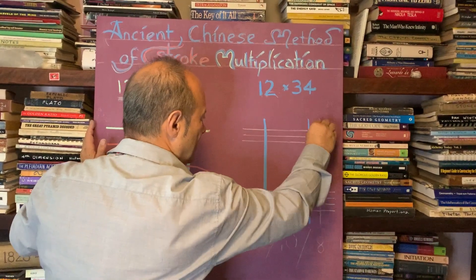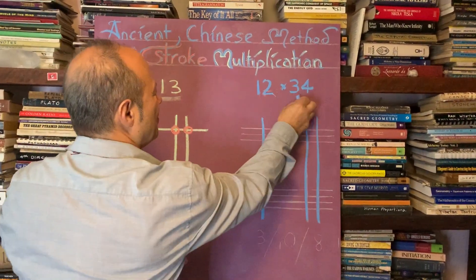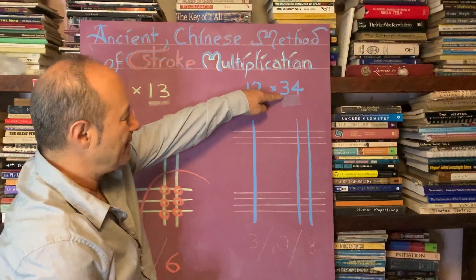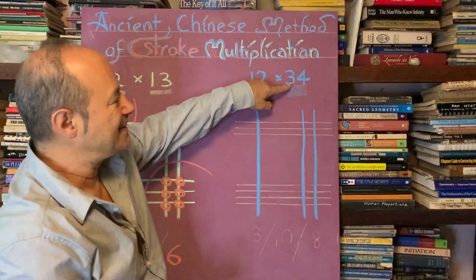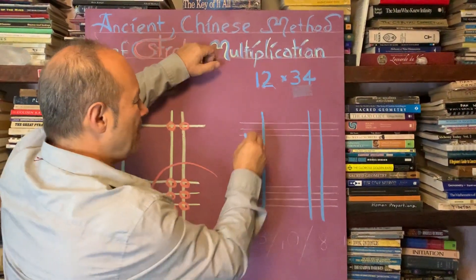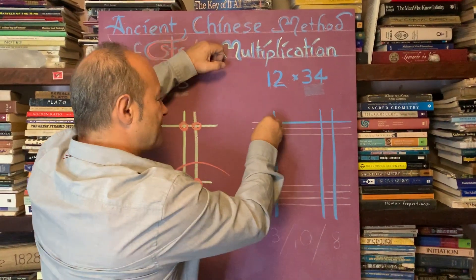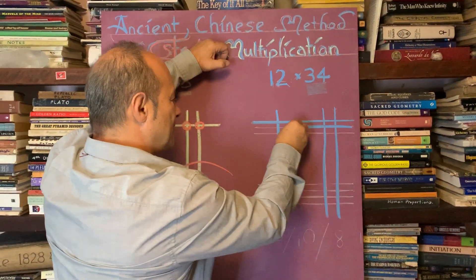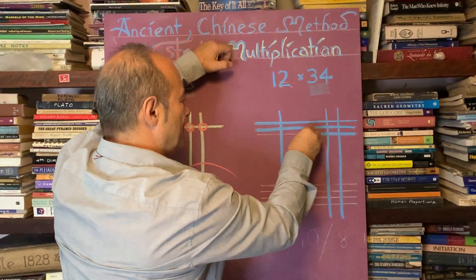We do a vertical bar of 10 with two units. One, two. Now, obviously when we do the 34, we're going to need three bars of 10. So to do the 30, we need to do three bars of 10. One, that's 10, 20, 30.